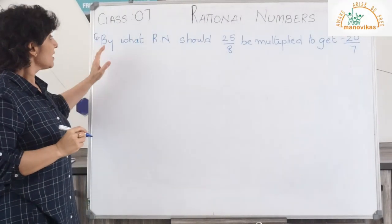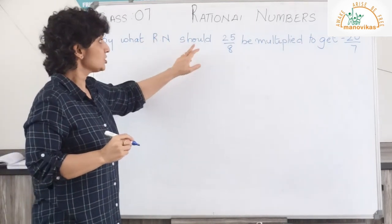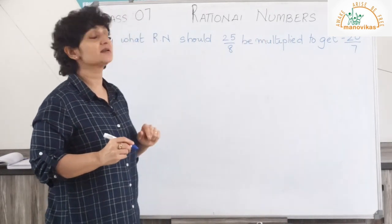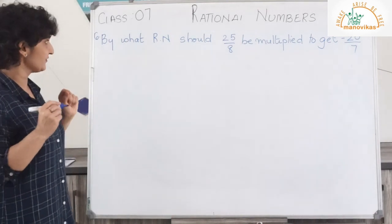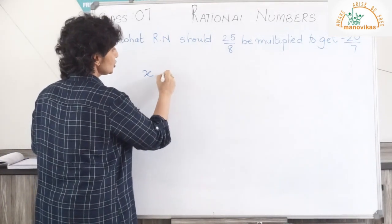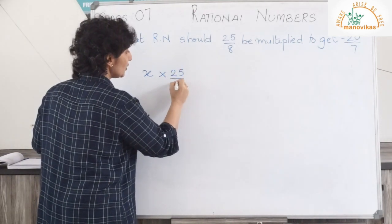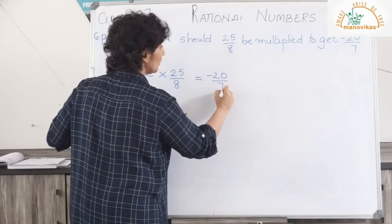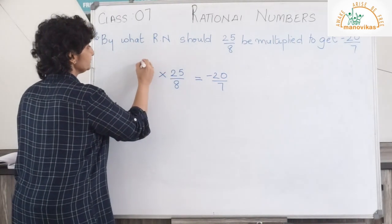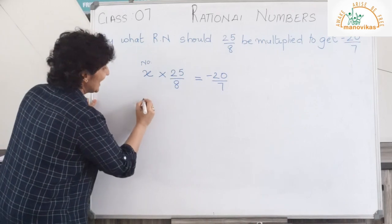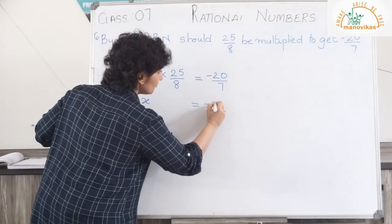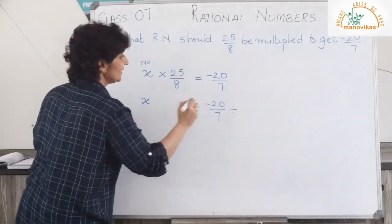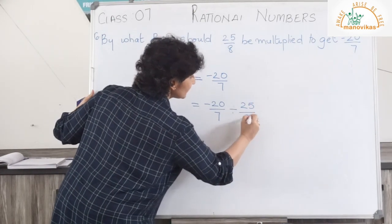Question 6: by what rational number should 25 upon 8 be multiplied to get minus 20 upon 7? I need to find this number. So x is equal to minus 20 upon 7 divided by 25 upon 8.